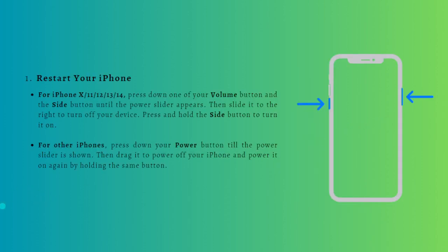The first solution is to restart your iPhone. The first simple solution to the iPhone green screen problem is to restart your iPhone — generally your iPhone screen turns normal after the device is restarted. If you're using an iPhone X through 14 model, follow the first process shown here, and if you're using other iPhones, follow the second process.